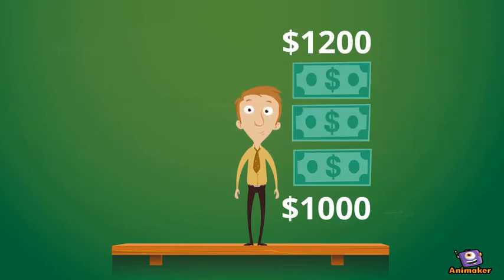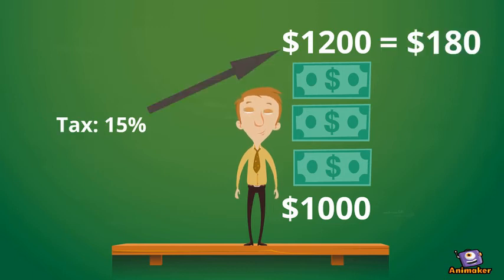If Bob's marginal tax rate is 15%, he would be taxed $180 on this grossed-up income of $1,200.